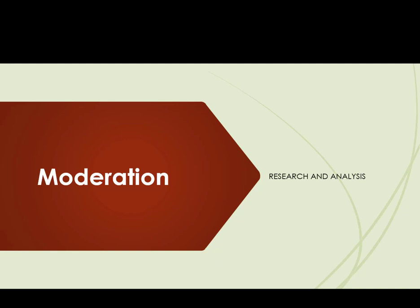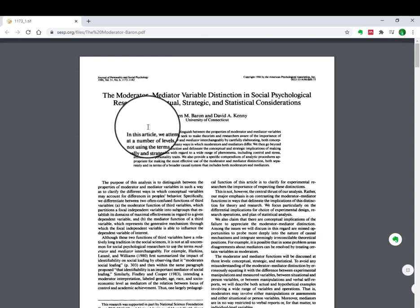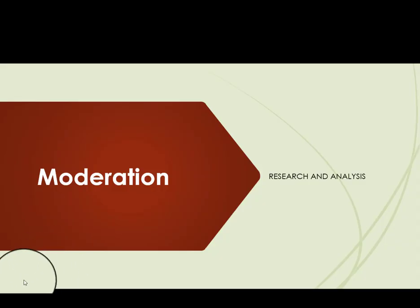If you are new to moderation analysis, I would recommend you to read the article 'Moderator-Mediator Variable Distinction in Social Psychological Research: Conceptual, Strategic, and Statistical Considerations.' If you need this article you can write your email address in the comments, or alternatively you can download it from Google Scholar. In this slide we have two models: one is a conceptual model and the other is a statistical model.